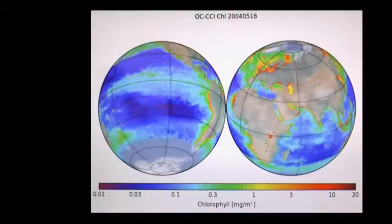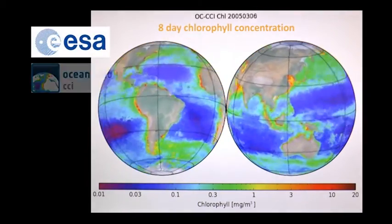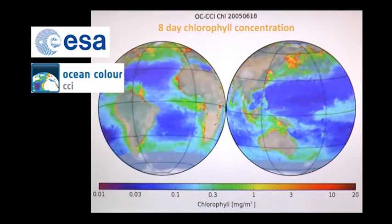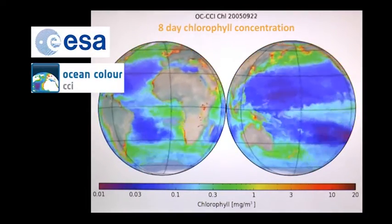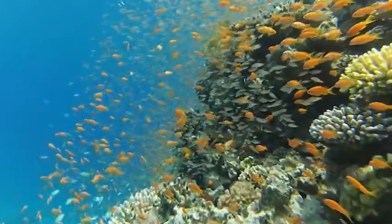New research in satellite remote sensing measurements, such as led by the European Space Agency Ocean Color Climate Change Initiative, can contribute to the management and development strategies to help protect pristine coral reefs of the Red Sea.